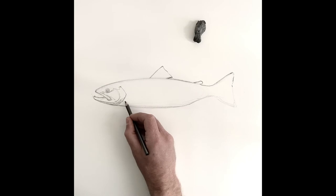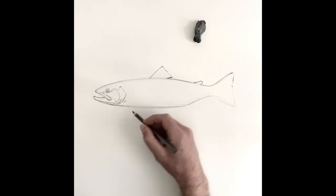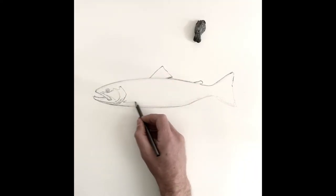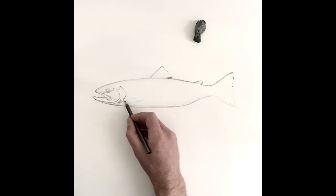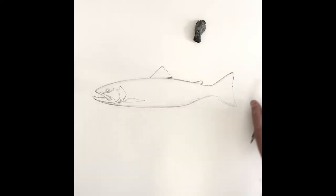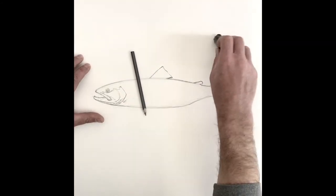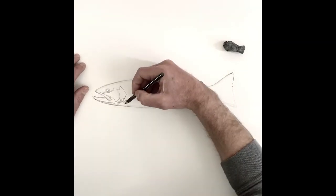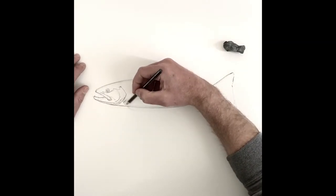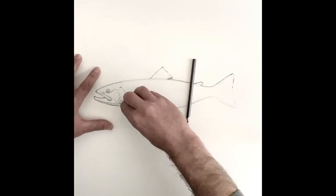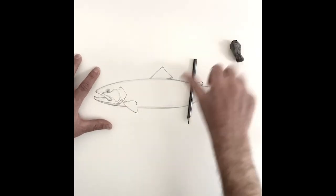And then think about the pectoral fin here starts kind of right behind this front gill plate. I mean pretty tight in right here. And you can draw the pectoral fin folded up like this. Depends on how the fish is holding the fin and kind of how you want the character of the fish to be. I usually like to do more of a kind of relaxed down fin, something like that. So that's the front pectoral fin.